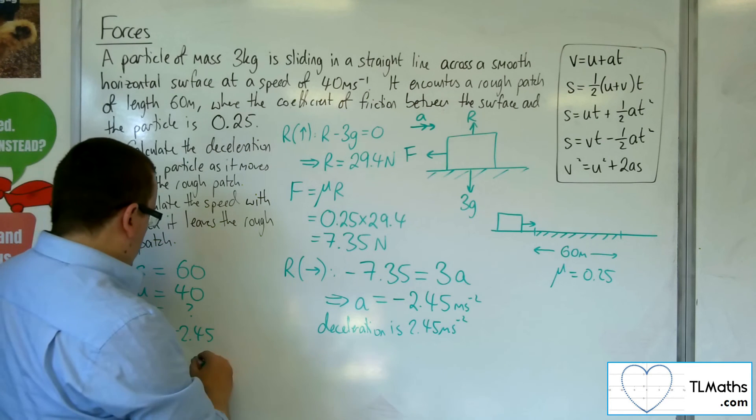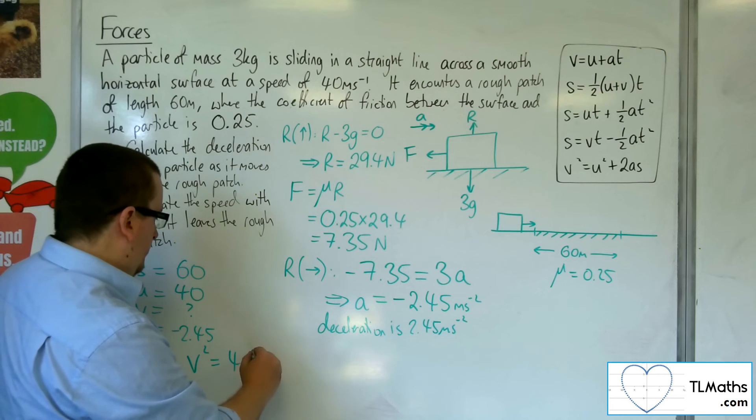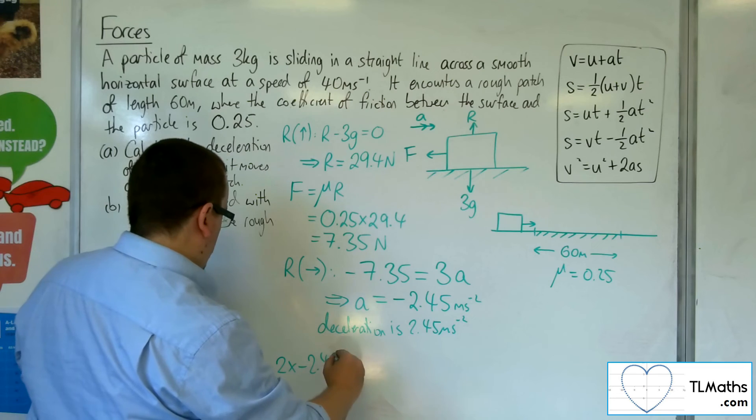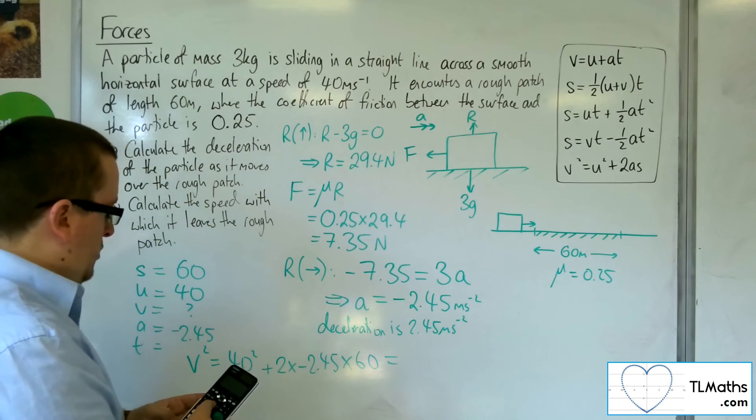So I want the equation that doesn't have T, which is the V squared. So V squared is U squared, so 40 squared, plus 2 times A times S.